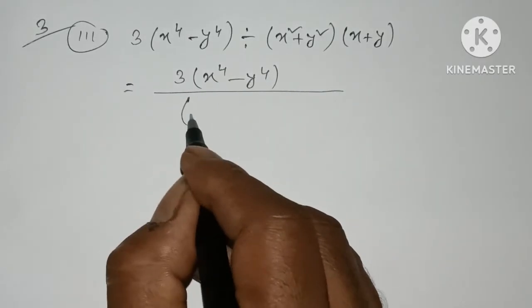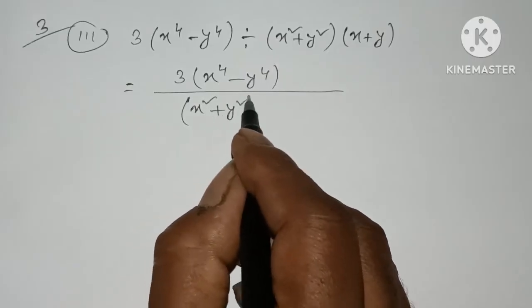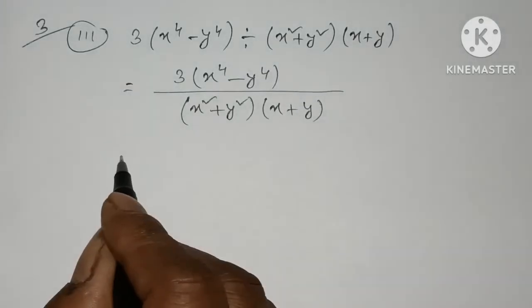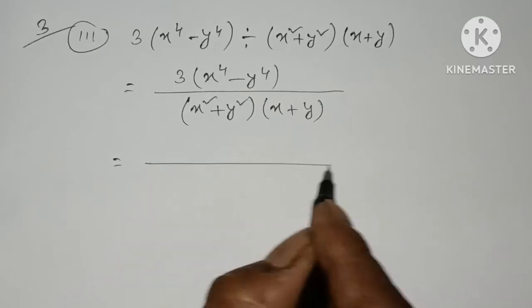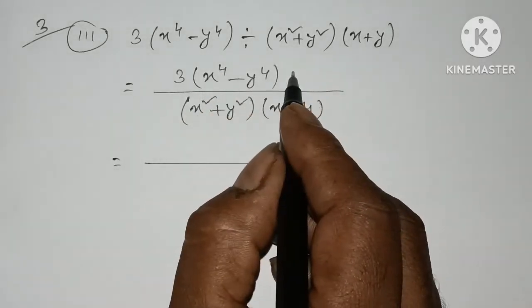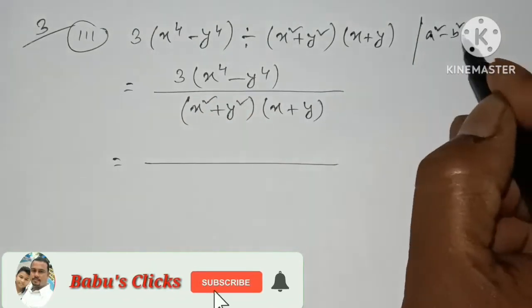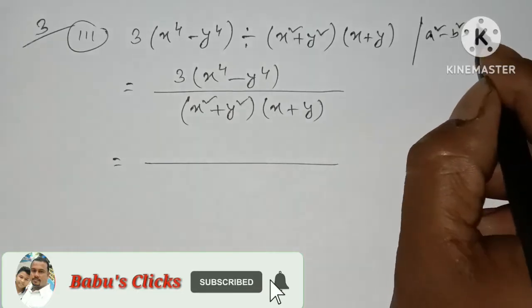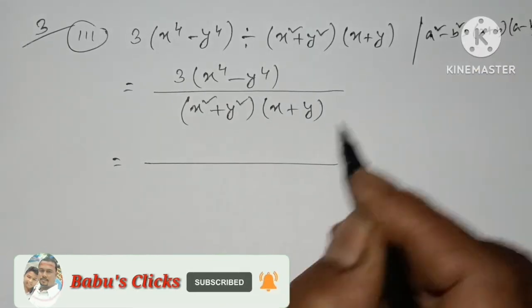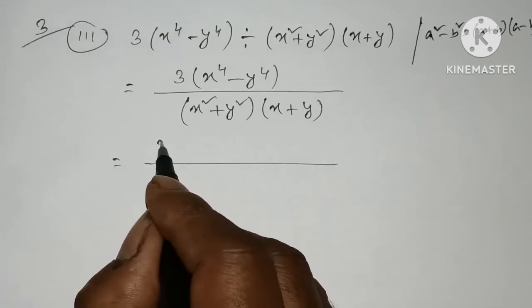Divided by x² plus y², x plus y. A² minus B² is equal to A plus B, all into A minus B. A² minus B², that is A plus B into A minus B.